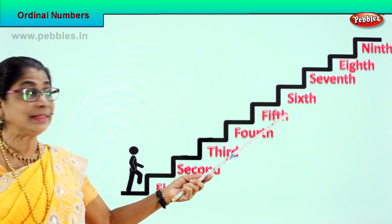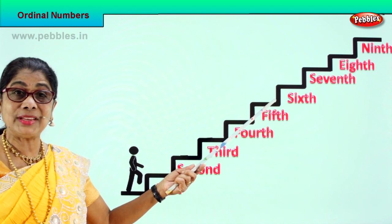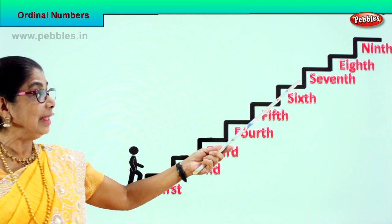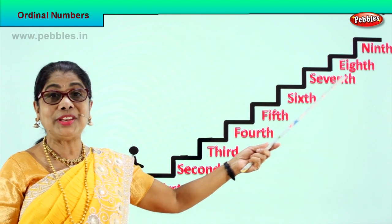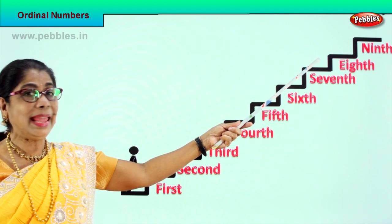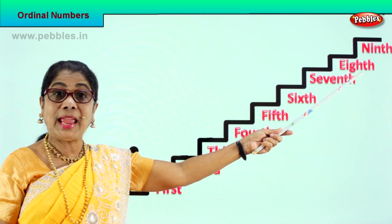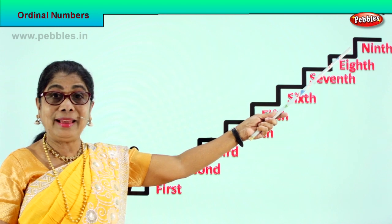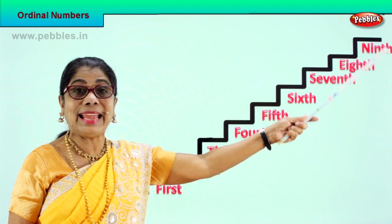He climbs to the sixth step. How do you spell sixth? S-I-X-T-H. Six. Then he goes to the seventh step. S-E-V-E-N — all you need to do is add TH. Seventh step. From there he goes to the eighth step. How do you spell eighth? E-I-G-H-T, add on TH. Eighth step. Finally he goes on to the ninth step. Spell ninth: N-I-N, no E, N-I-N-TH. Ninth.